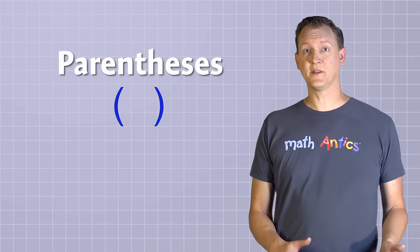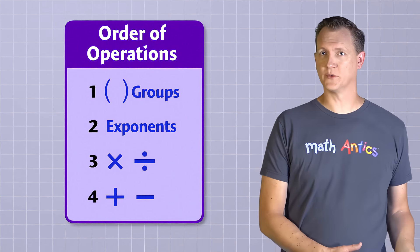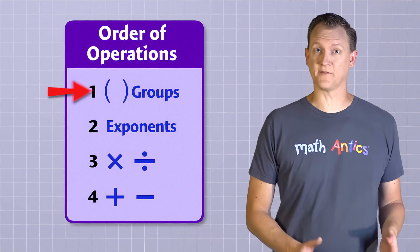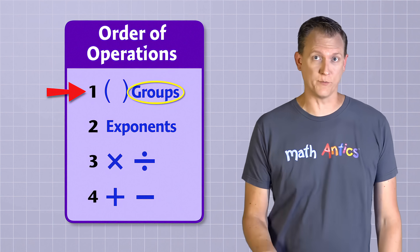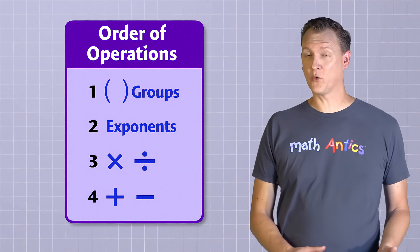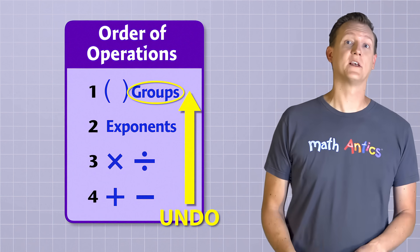Those examples are pretty easy, right? But solving two-step equations gets a bit trickier thanks to groups in math. Do you remember how parentheses are used to group things? Our order of operations rules say we do operations inside groups first — meaning when we're solving equations and undoing operations, we need to wait and do groups last of all.